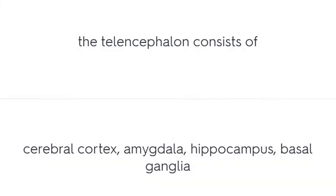The telencephalon consists of the cerebral cortex, amygdala, hippocampus, and basal ganglia.